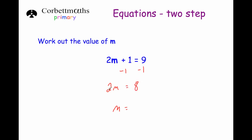Next we've got 2m equals 8. Remember this means times by 2, so we do the opposite to both sides to get rid of the times by 2 — divide by 2 on both sides. 2m divided by 2 is just m, and 8 divided by 2 is 4. So our answer is m equals 4. We can test it: 2 times 4 is 8, plus 1 is 9. ✓